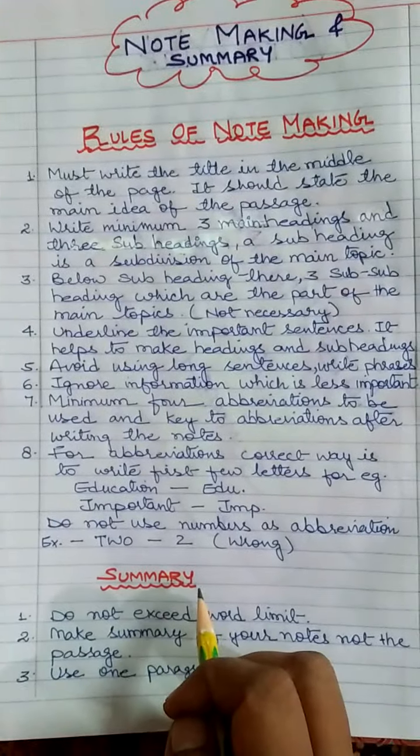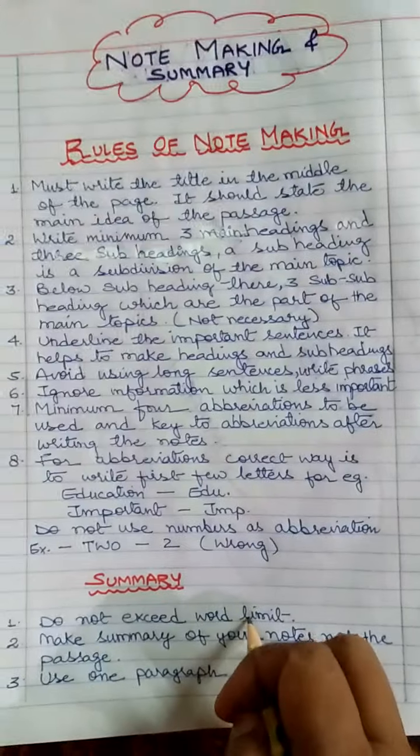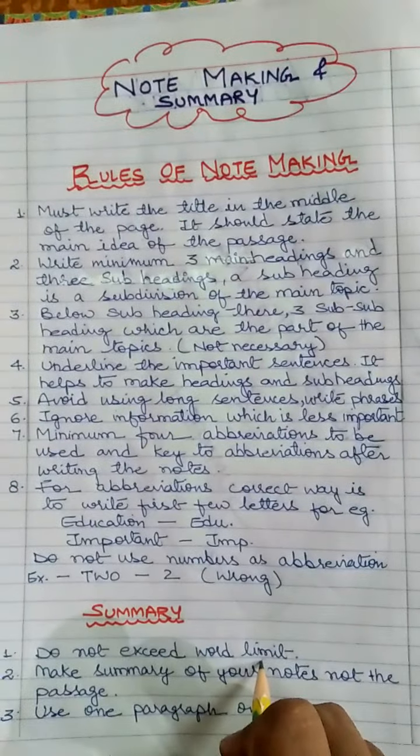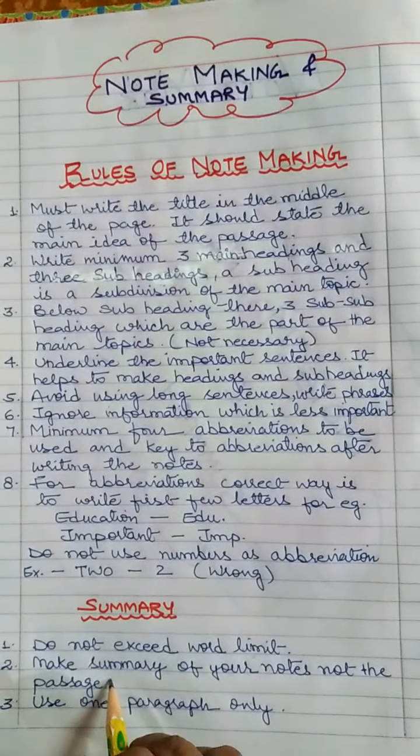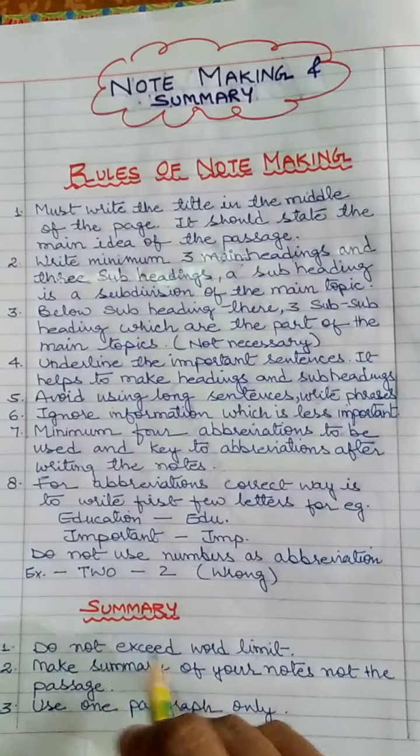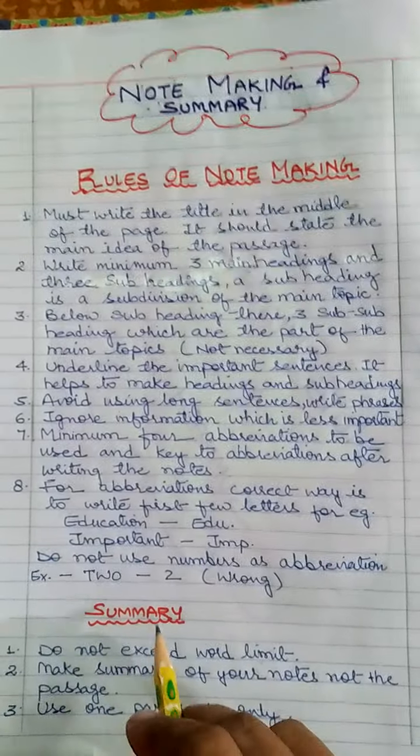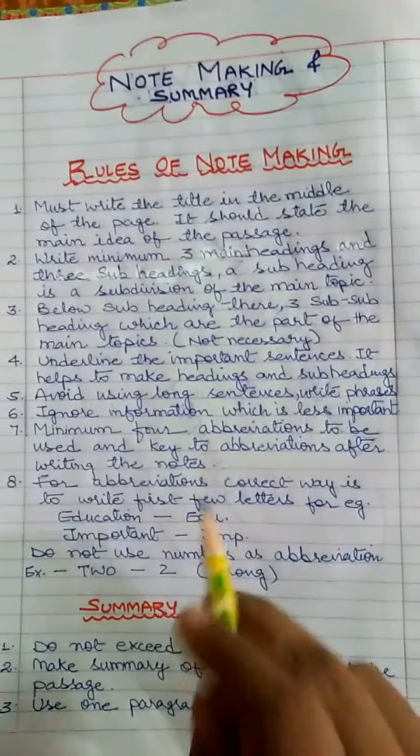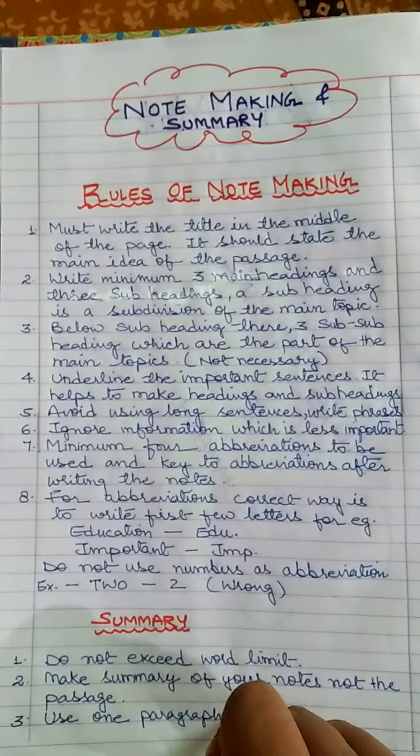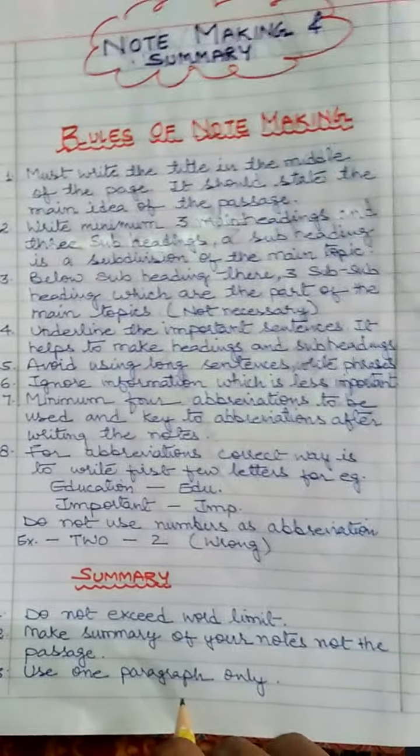Now let's go to the rules of summary. Do not exceed word limit. When we write summary, whatever word limit is given in the question paper we need to stick to that. Make summary of your notes, not the passage. Summary we have to make of the notes what we have prepared in note-making, not of the passage given in the question paper. So write the summary only of the note-making what you have written in your answer. Use one paragraph only. Three, two, three, four paragraphs is not required in summary. Just one is enough.